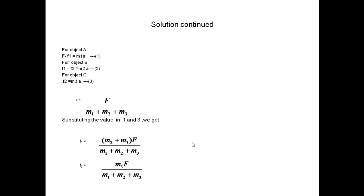Now using Newton's law equations: for object A, F minus F1 equals M1·A. For body B, F1 minus F2 equals M2·A, since both contact forces act in opposite directions. For body C, F2 equals M3·A. There are three unknowns — F1, F2, and A — and we have three equations. Solving: acceleration A equals F divided by (M1 + M2 + M3). Substituting back, contact force F1 equals (M2 + M3)·F divided by (M1 + M2 + M3), and contact force F2 equals M3·F divided by (M1 + M2 + M3).